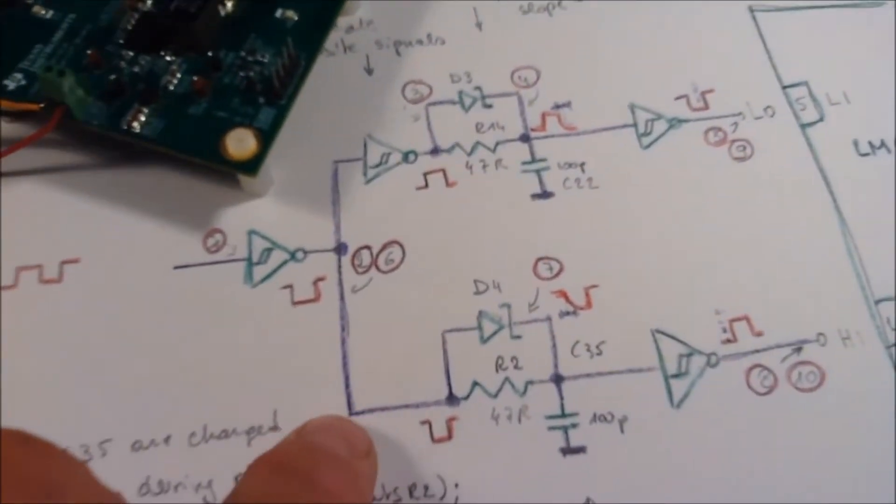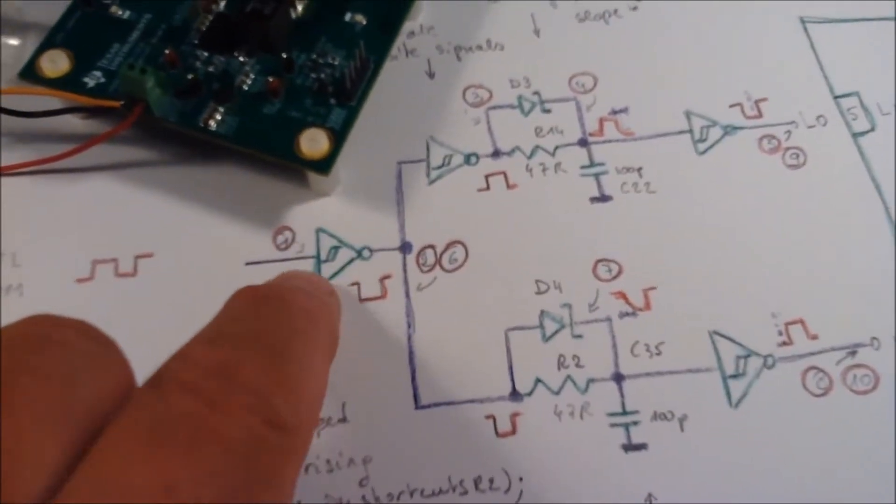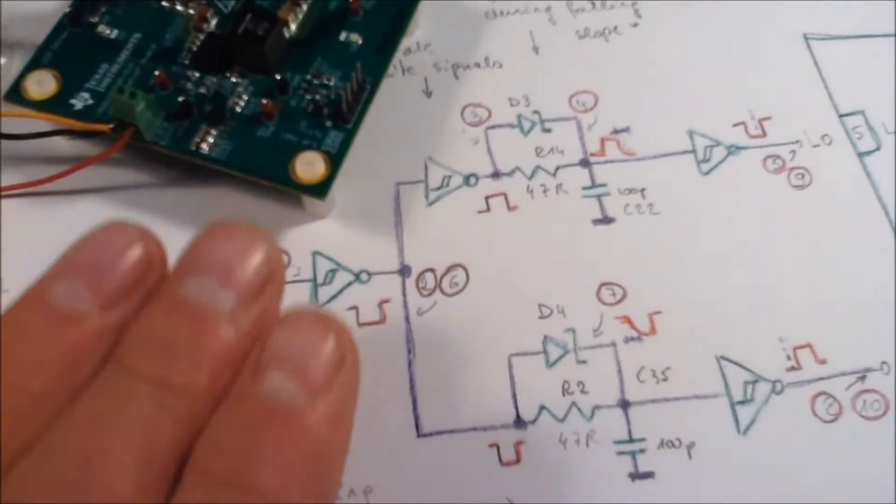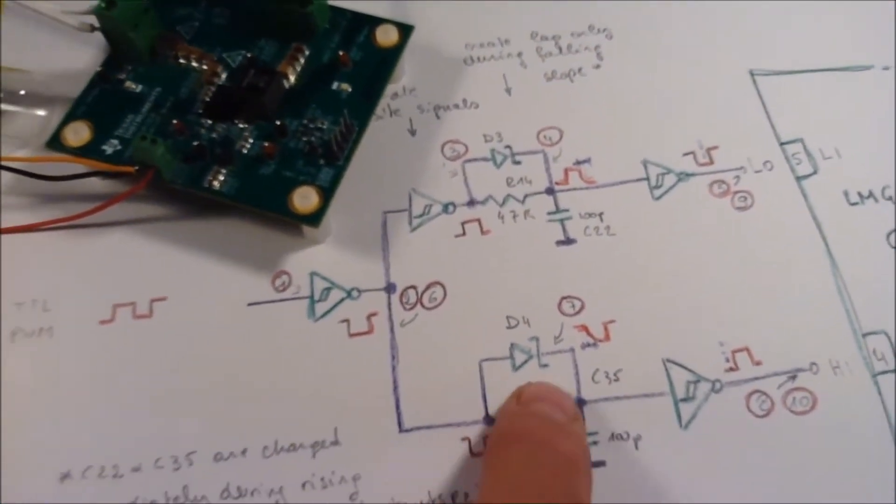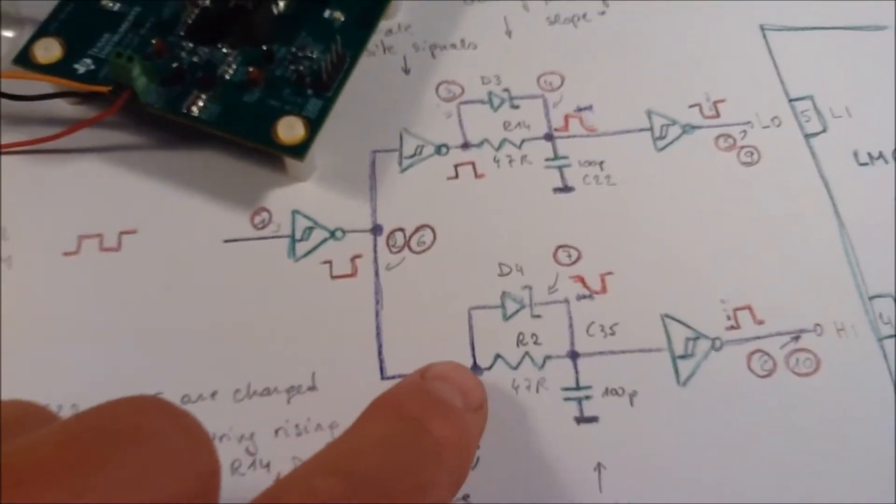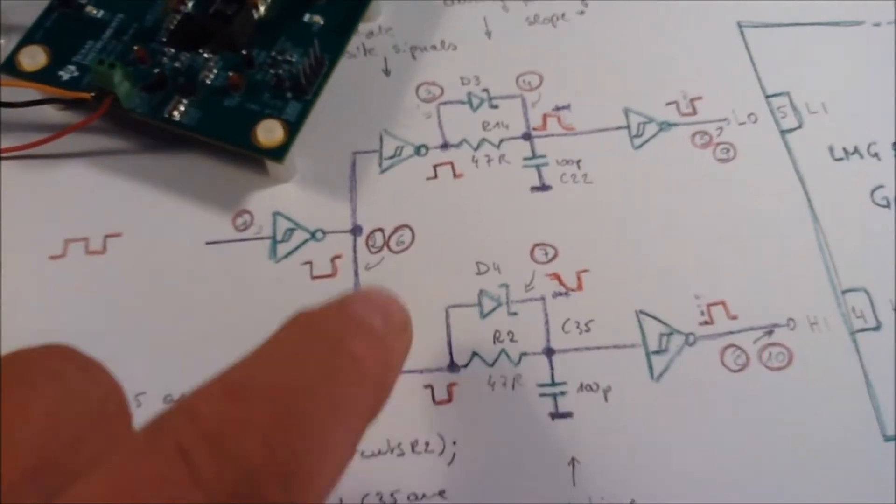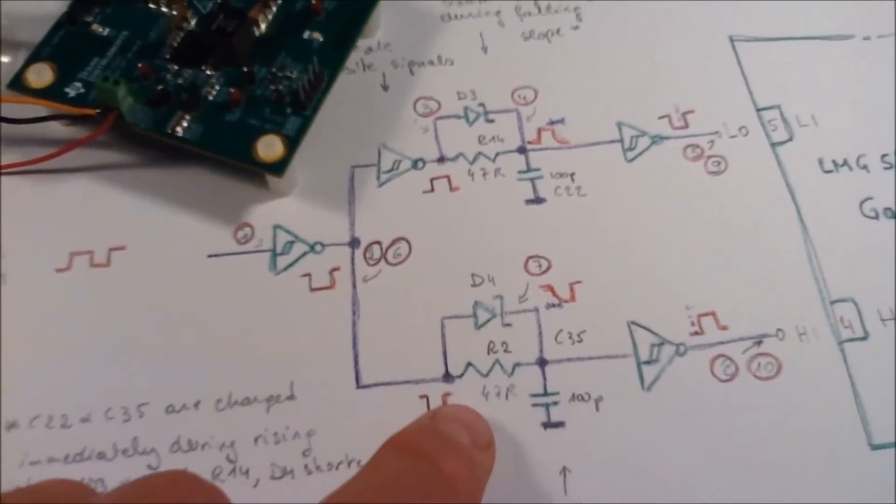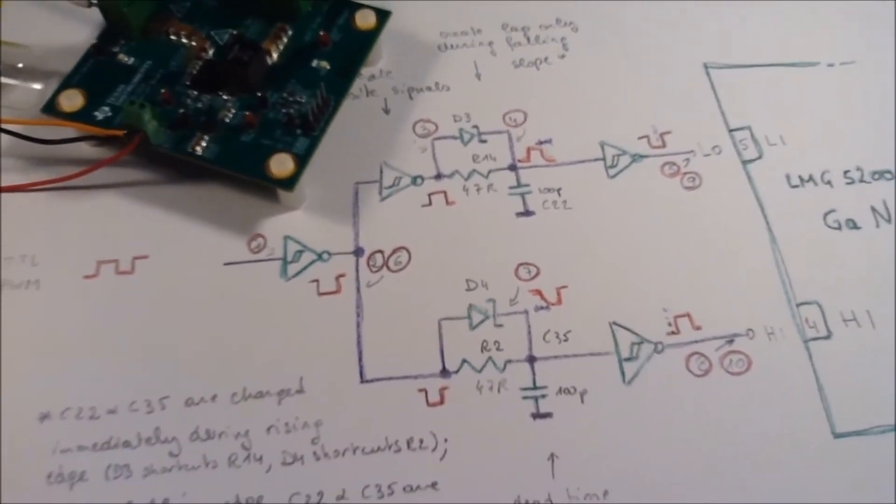And what do we see here? The same thing - we see that buffer, it's an inverter in this case but that doesn't matter. We see the same RC circuit and another buffer inverter. The only thing that Texas Instruments has done differently is that they have put a diode over the resistor.